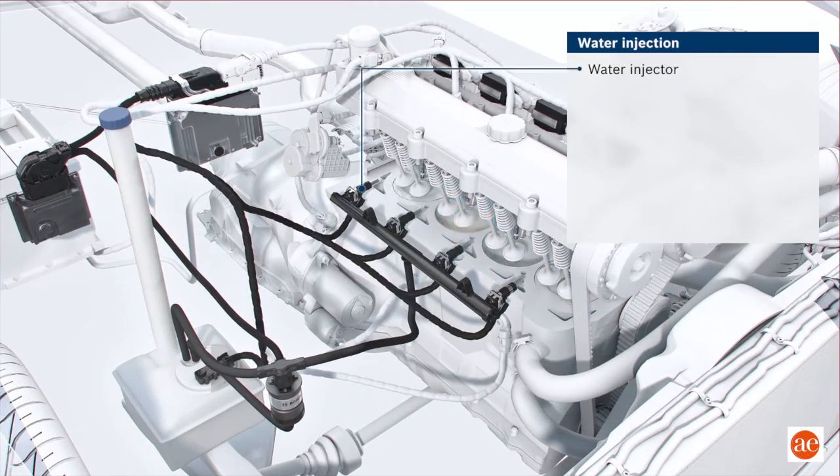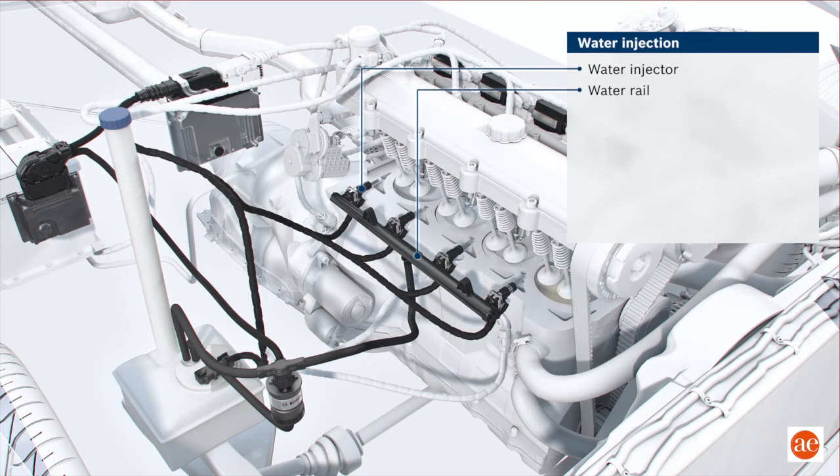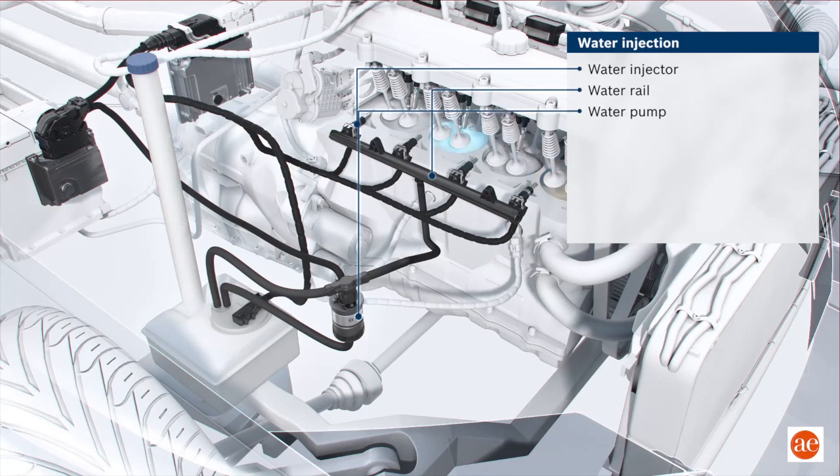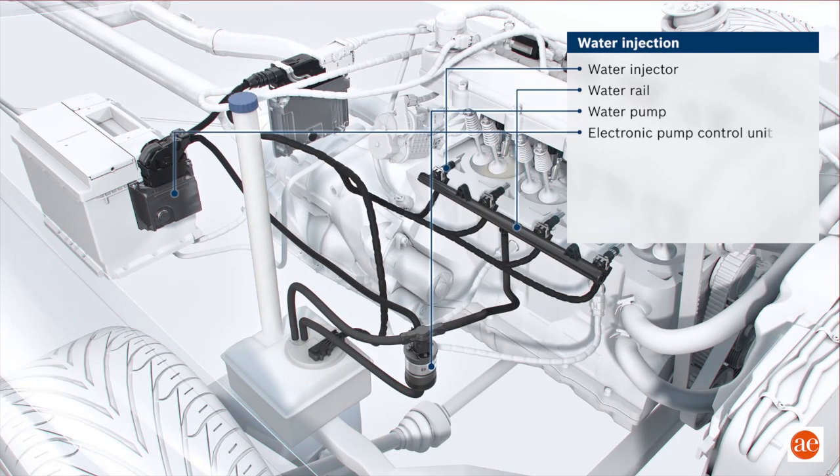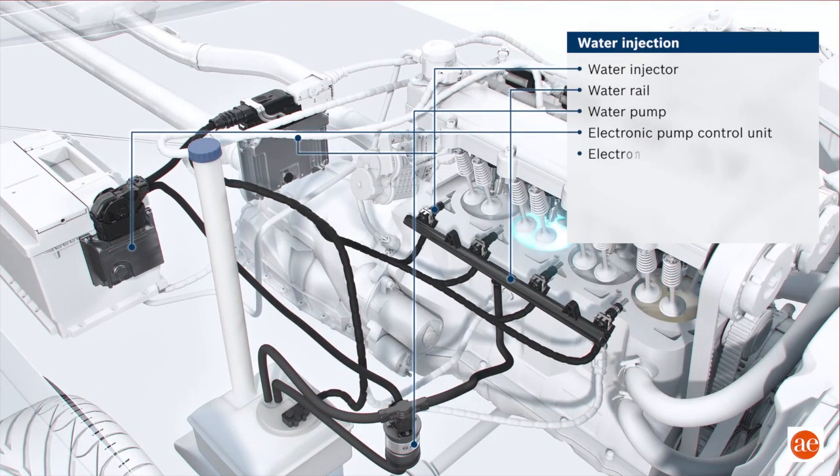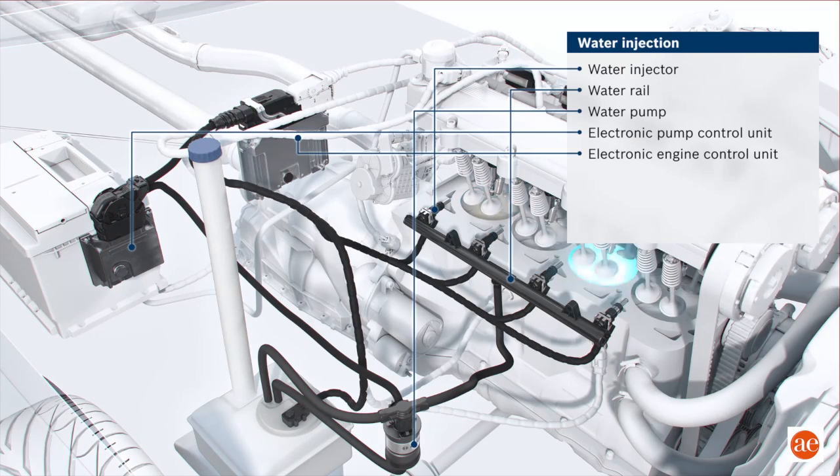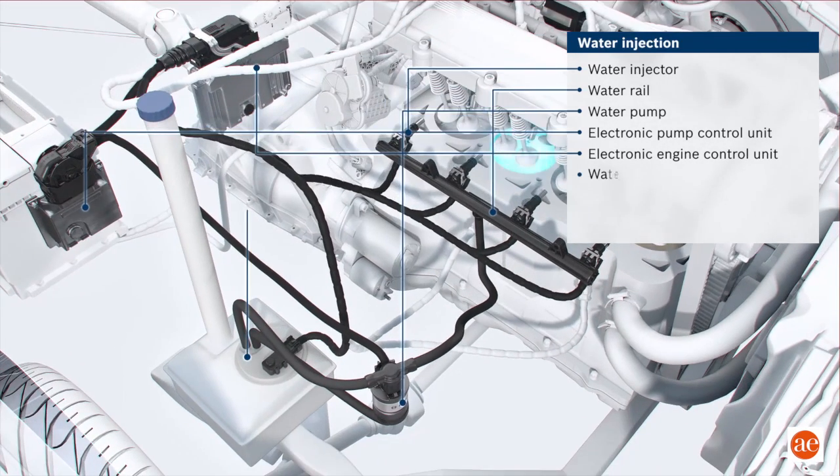Besides the water injector and the water rail, the system contains further components: a water pump, an electronic pump controller, an electronic engine control unit for the entire system, and last, a water tank.